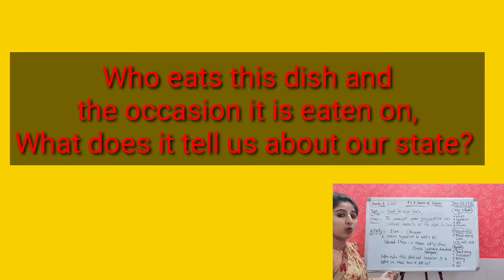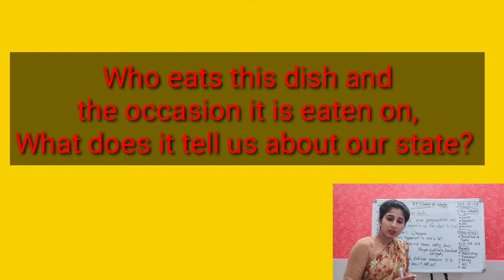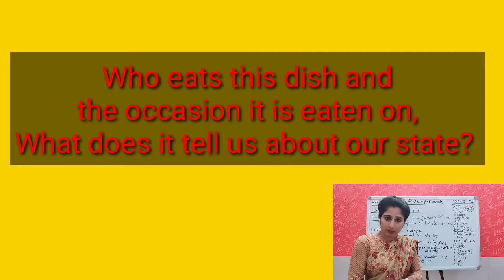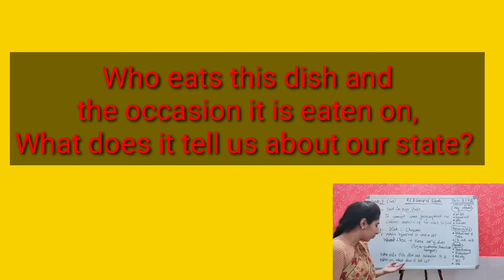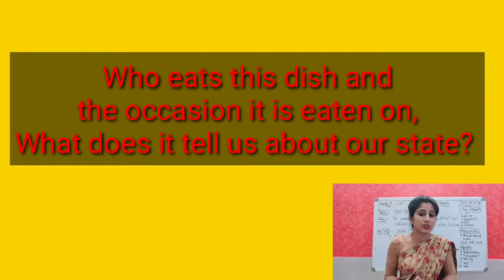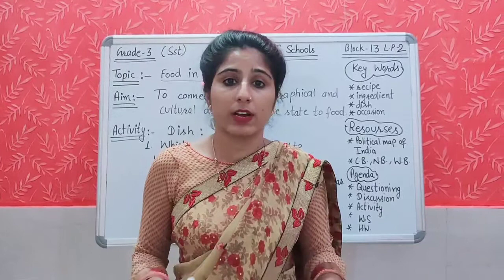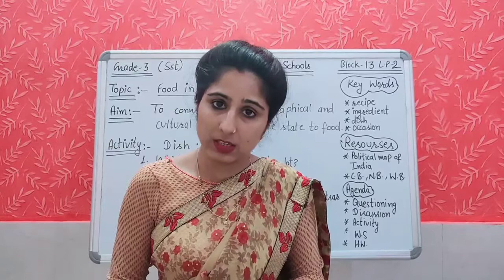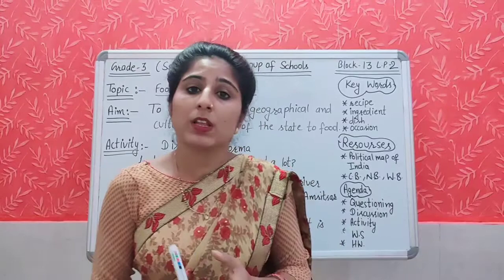My next question: who eats this dish — Churma? It is eaten by all. And on which occasion is it eaten? It is a common dish, eaten by all people including common people. Why? Because the ingredients are easily available — the main ingredient is wheat, which is grown widely in this area. What does this dish tell us about our state? This dish tells us that the wheat crop is grown here on a large scale. That is the common aspect which we have found from this dish.